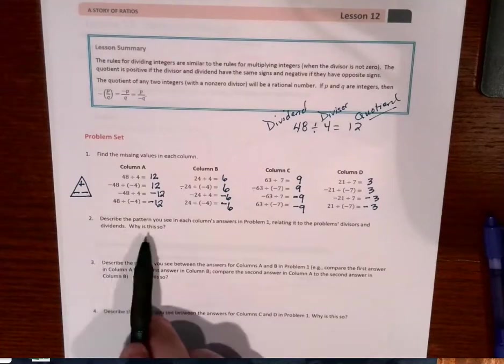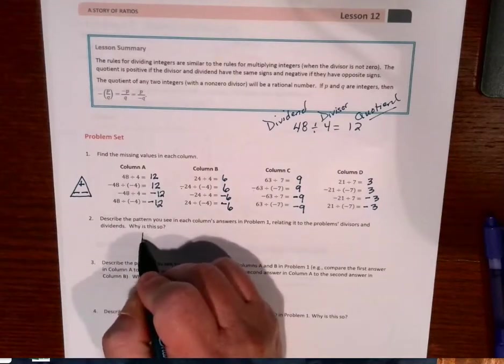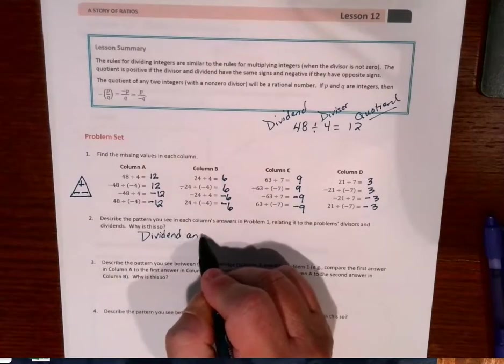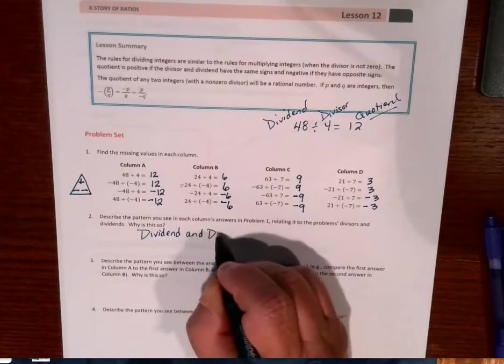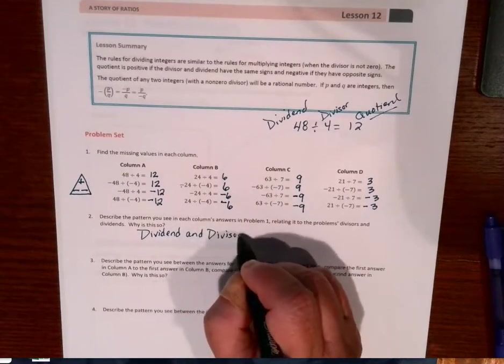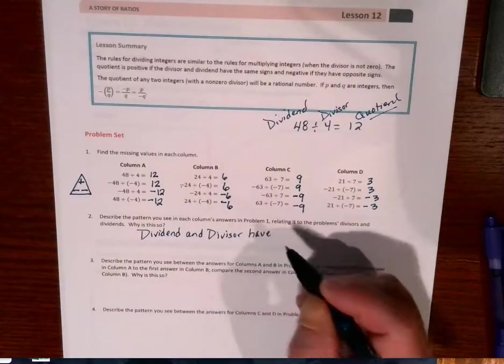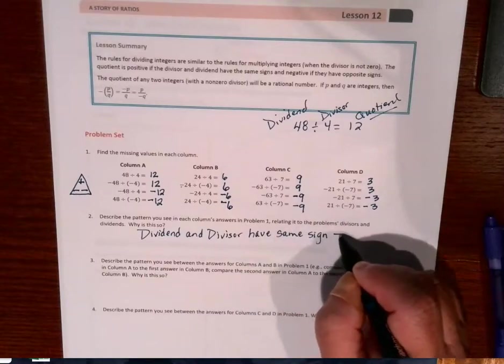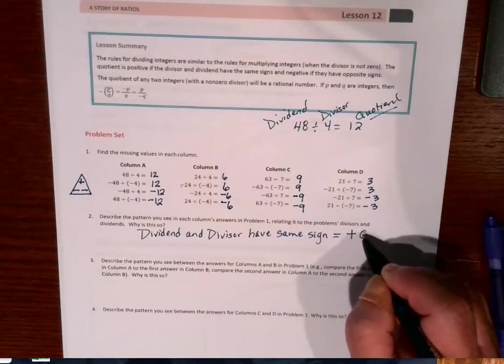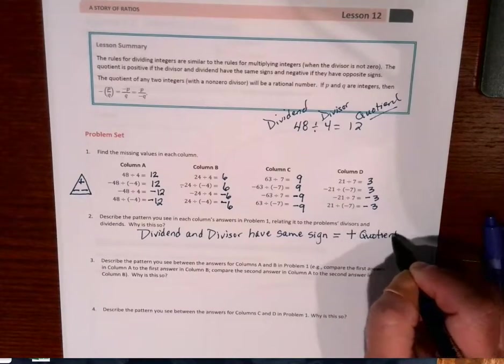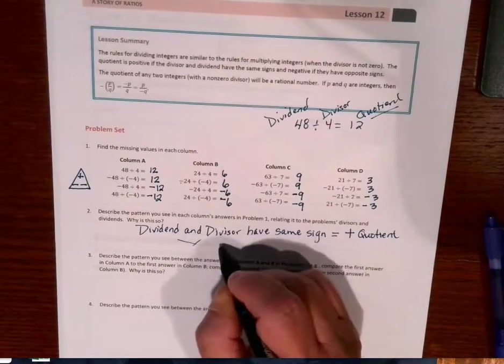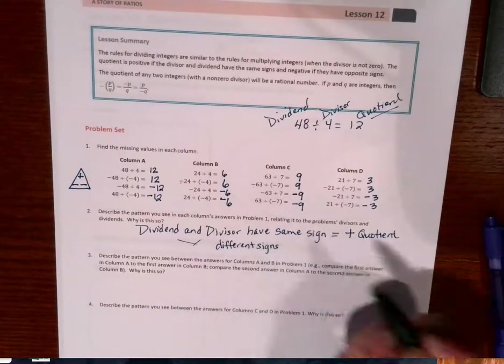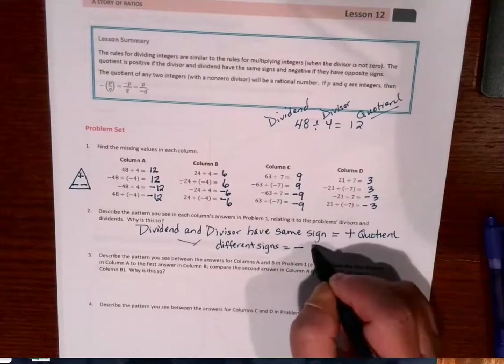Okay, so in looking at this, I'm noticing that when the dividend and the divisor have the same sign, they are positive quotients. It equals a positive quotient. So if they have a different sign, for different signs, then it equals a negative quotient.